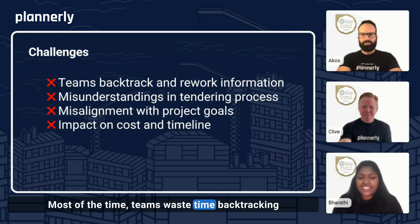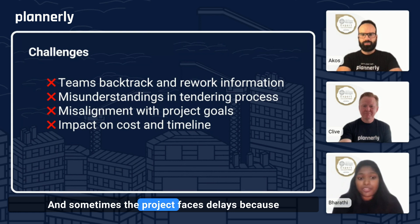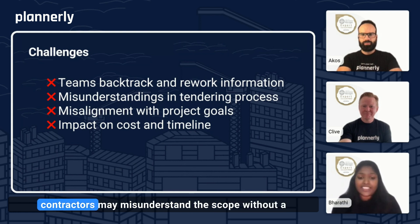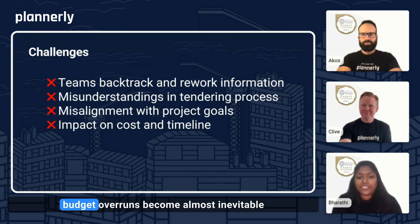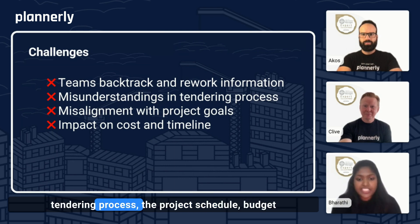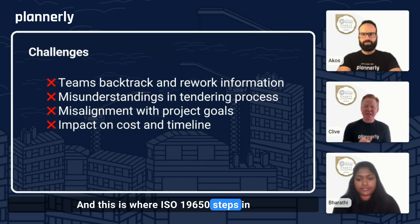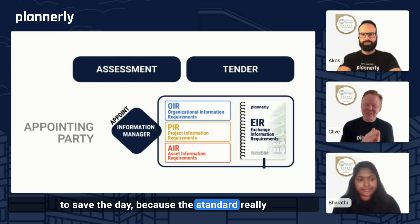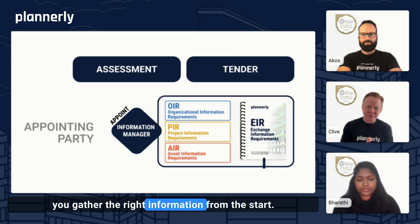Most of the time, teams waste time backtracking and trying to fix unclear or incorrect information. Sometimes the project faces delays because contractors may misunderstand the scope without a clear invitation to tender process. Budget overruns become almost inevitable when we're forced to rework things later on. Without a structured assessment and tendering process, the project schedule, budget, and quality are all at risk. This is where ISO 19650 steps in to save the day.